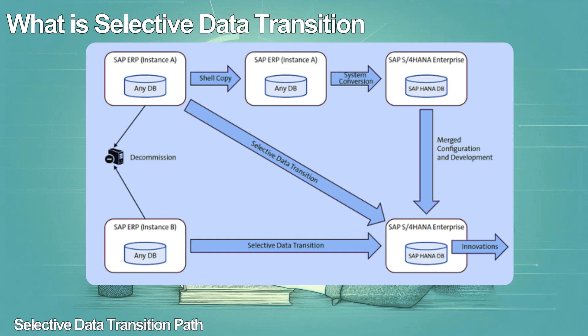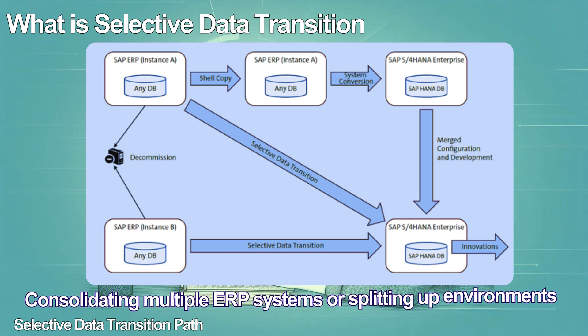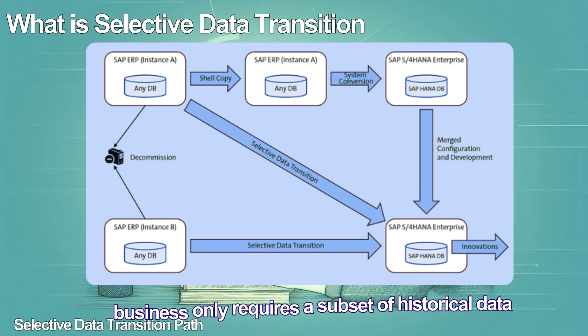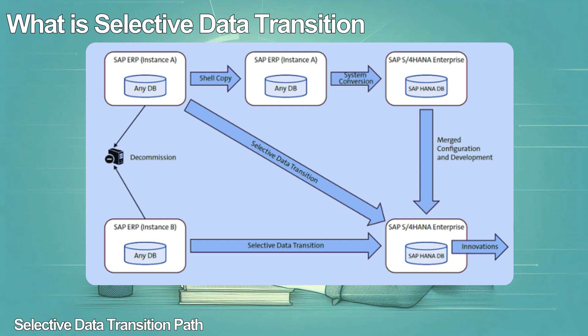You should consider selective data transition if you need a phased go-live instead of a big bang cutover, you're consolidating multiple ERP systems or splitting up environments, your business only requires a subset of historical data, or you're looking to preserve stable processes while innovating others. It's ideal for organizations navigating complex operational landscapes or undergoing strategic changes like mergers, acquisitions, or leadership shifts.